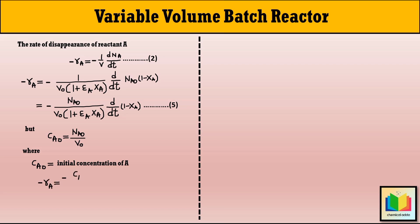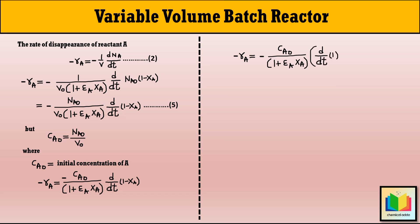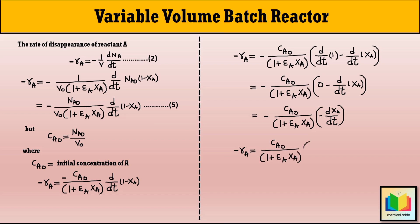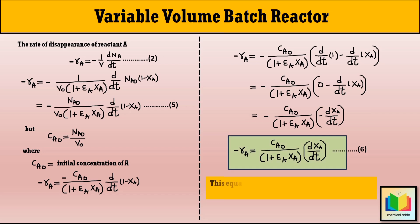Taking the derivative of (1 − XA): d/dt(1 − XA) = d/dt(1) − d/dt(XA) = 0 − dXA/dt. Substituting back, we get the final equation: −rA = CA0 / (1 + εA·XA) × dXA/dt. This equation shows the rate of disappearance of reactant A for a variable volume batch reactor in terms of conversion. From this equation we can find the integrated rate equation for different order reactions.